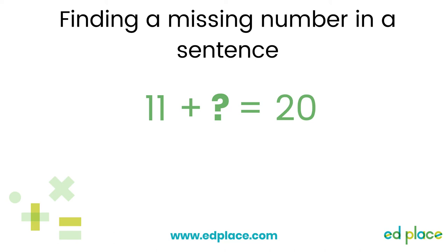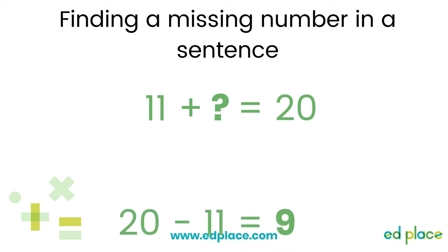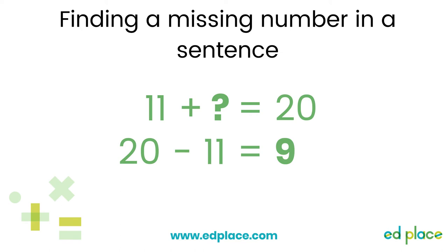Let's look at this example together. Which rule will help us to find the missing number in this sentence? The missing number is in the middle of the sentence, so we'll follow the rule and do a subtraction using the digits we have been given. We move the numbers around and put the largest number at the beginning of the subtraction sentence: 20 take away 11 equals 9. We check back with the original question: 11 add 9 equals 20.